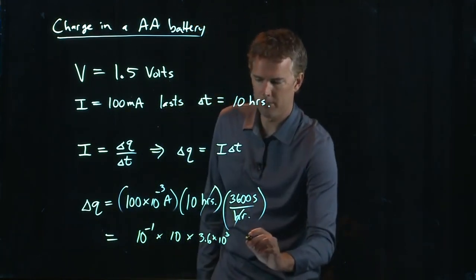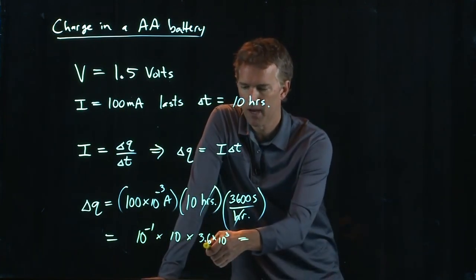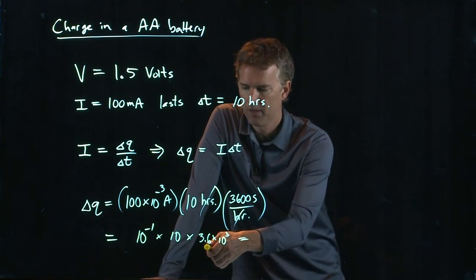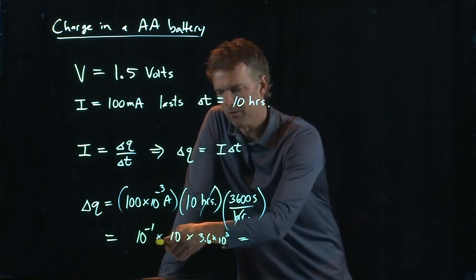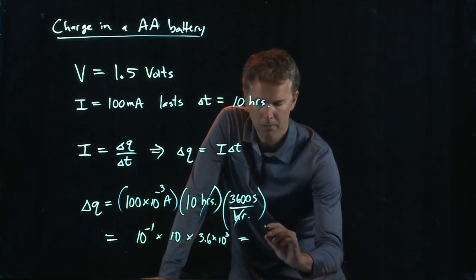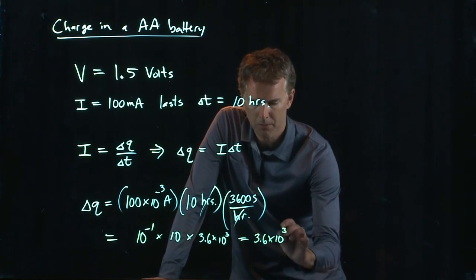And if we plug in all those numbers into your head, it's not so bad, right? We've got a 3.6, and then we've got a 10 to the 3, a 10 to the 4, and then we're subtracting 1, so it's a 10 to the 3 again. And so we just end up with 3.6 times 10 to the 3.